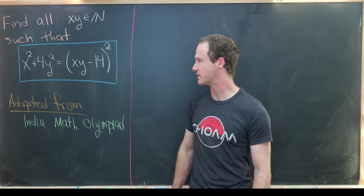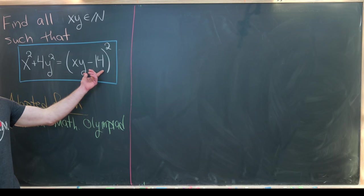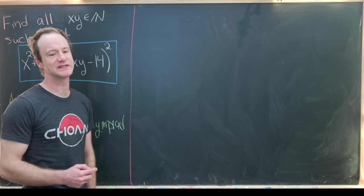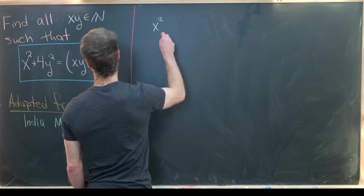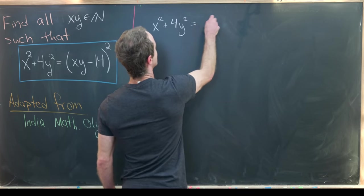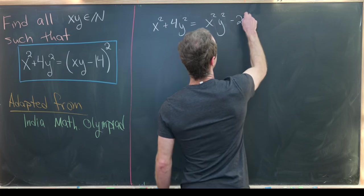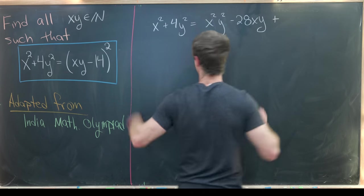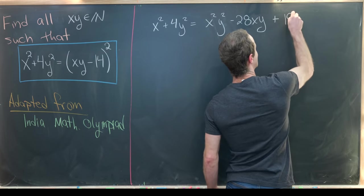Let's jump into the solution. First off, I want to square out this right hand side just to get a handle on maybe some simplification that can occur. If I do that I get x squared plus 4y squared equals x squared y squared minus 28xy and then finally plus 14 squared, but 14 squared is 196.